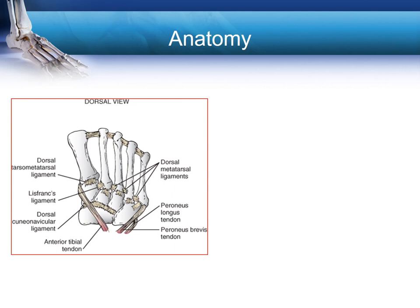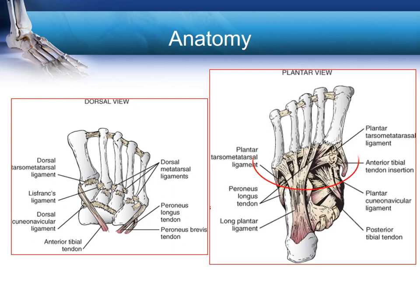The anatomy in this region is complex. It's important to consider the ligaments on the plantar aspect of the foot as well as the dorsal aspect. On the dorsal side, the tibialis anterior crosses onto the navicular and supports the medial column. Lisfranc's ligament crosses between the base of the second metatarsal and the medial cuneiform, and is made up of three parts: the dorsal part, an interosseous part, and the plantar part — with the plantar part being the strongest.